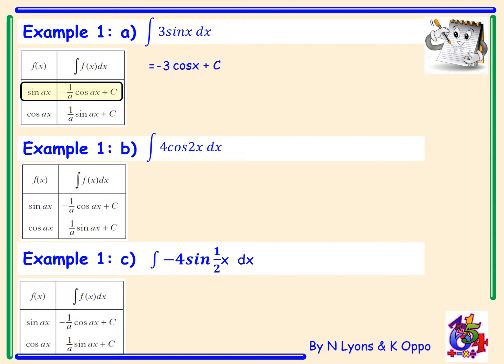Example 1b. Here we have the integral of 4 cos 2x dx. We're going to use the second rule in our table. We copy the number 4 down, and cos 2x becomes sin 2x. However, because there's a number in front of x we need to divide by that number at the front. So the expression is 4 over 2 sin 2x plus c, which simplifies to 2 sin 2x plus c.